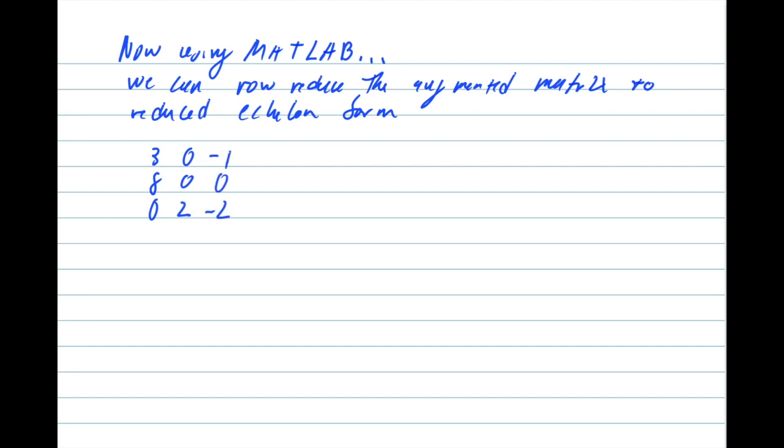And we have the matrix to start out with: 3, 0, negative 1, 0, 0; row 2: 8, 0, 0, negative 2, 0; row 3: 0, 2, negative 2, negative 1, 0.